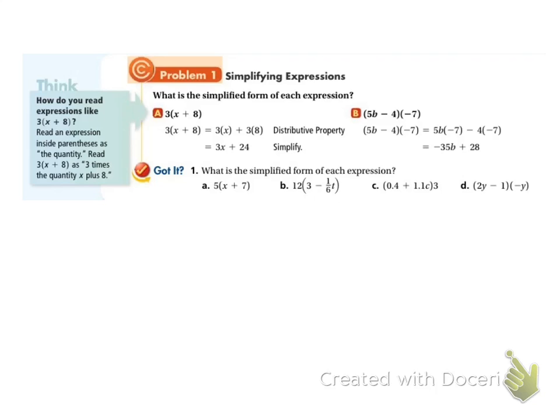If we look at 3 times (x plus 8), we distribute the 3 to the x and we distribute the 3 to the 8, so we get 3x plus 24. And the same thing works if the number is behind it — you still distribute it to both things.